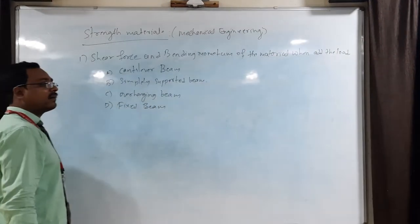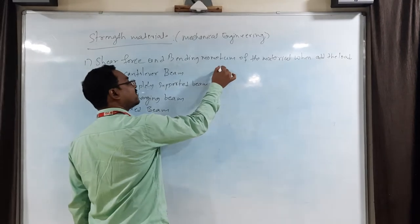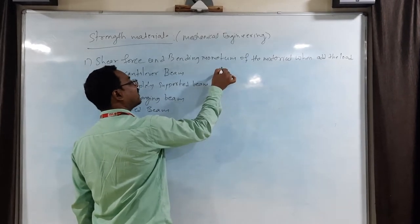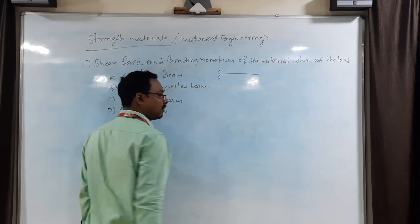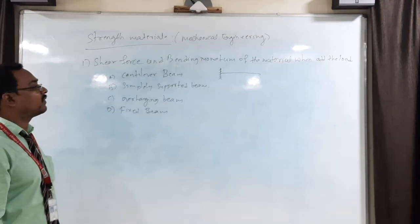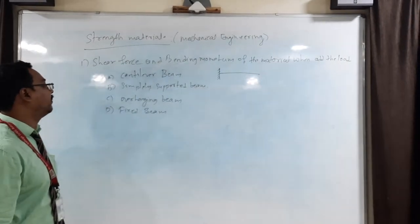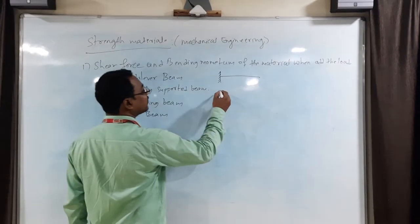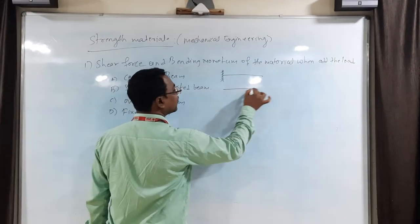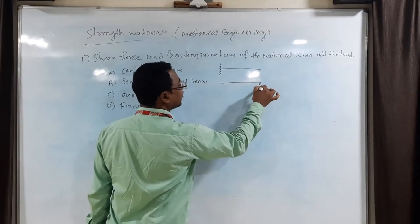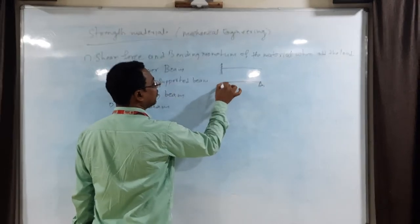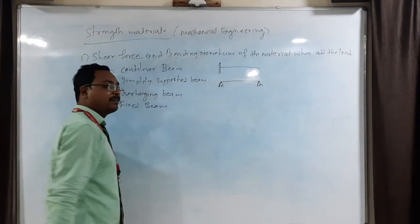So if the cantilever beam is there, it has one side fixed, another end is free. One end is fixed, another end is free. It is called cantilever beam. Simply supported beam with no fixed, just the beam is resting on some support. That is called simply supported beam.